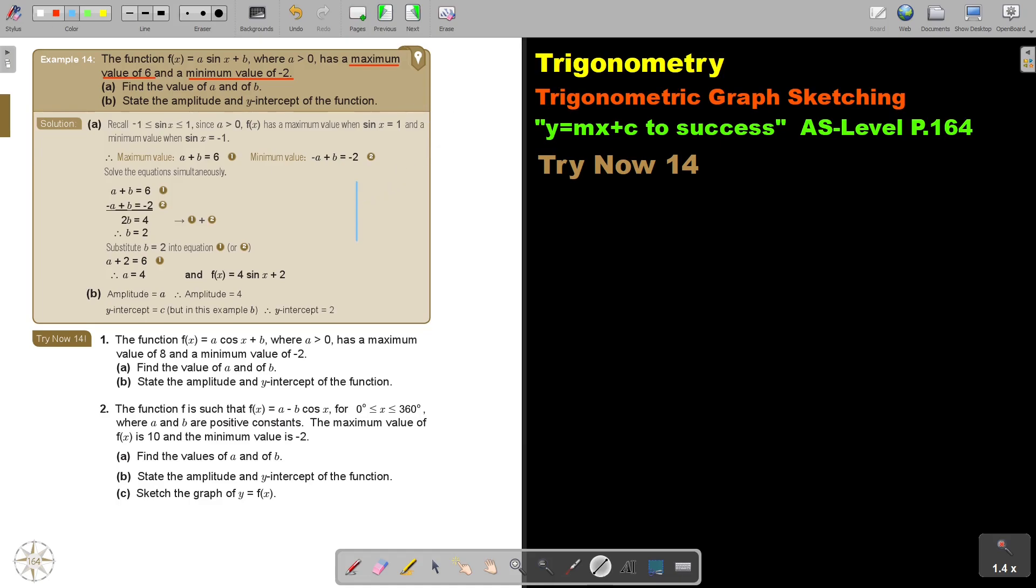If you think of the graph, you just basically have to think of that. I'll just draw the sign graph. Let's make a better line. Okay so the minimum value, this is negative one. The maximum value is a plus b equals six, that's what they said there. The minimum value is negative a plus b is equal to negative two. Solve the equations simultaneously.